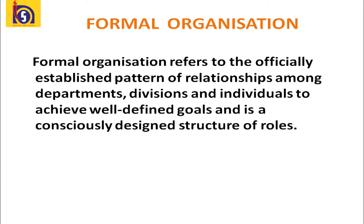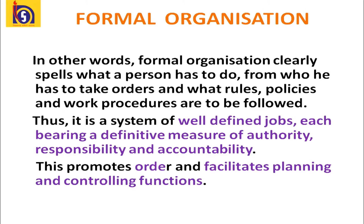There are two types of organizations: formal and informal. Formal organization refers to the officially established pattern of relationships among departments, divisions, and individuals to achieve well-defined goals — it is a consciously designed structure of roles. Formal organization clearly spells out what a person has to do, from whom they take orders, and what rules, policies, and work procedures are to be followed. It is a system of well-defined jobs, each bearing a definite measure of authority, responsibility, and accountability, promoting order and facilitating planning and controlling functions.